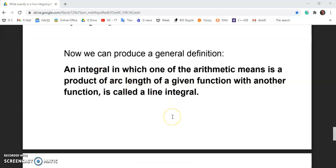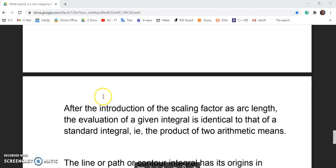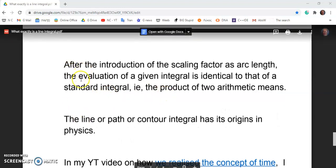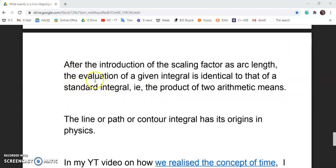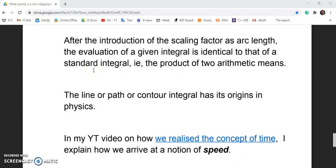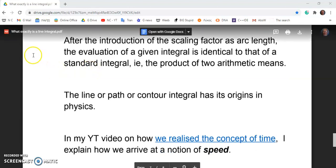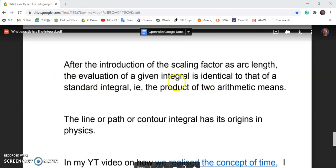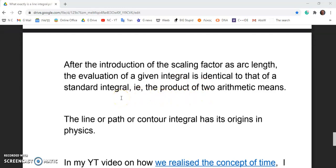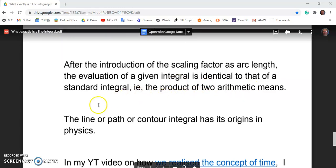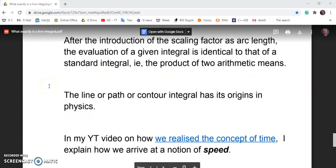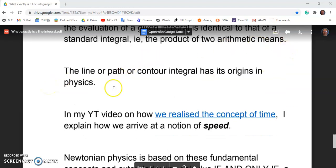So we can now produce a general definition. An integral in which one of the arithmetic means is a product of arc length of a given function with another function is called a line integral. And that, my friends, is what is a line integral and what the answer to the question on Wikipedia is, what is it? So what these mainstream academics who are real reptiles do is they learn these things by heart. They never really understand them. And all you have here is an introduction of the scaling factor as arc length and the evaluation of a given line integral is identical to that of a standard integral. In other words, a product of two arithmetic means.